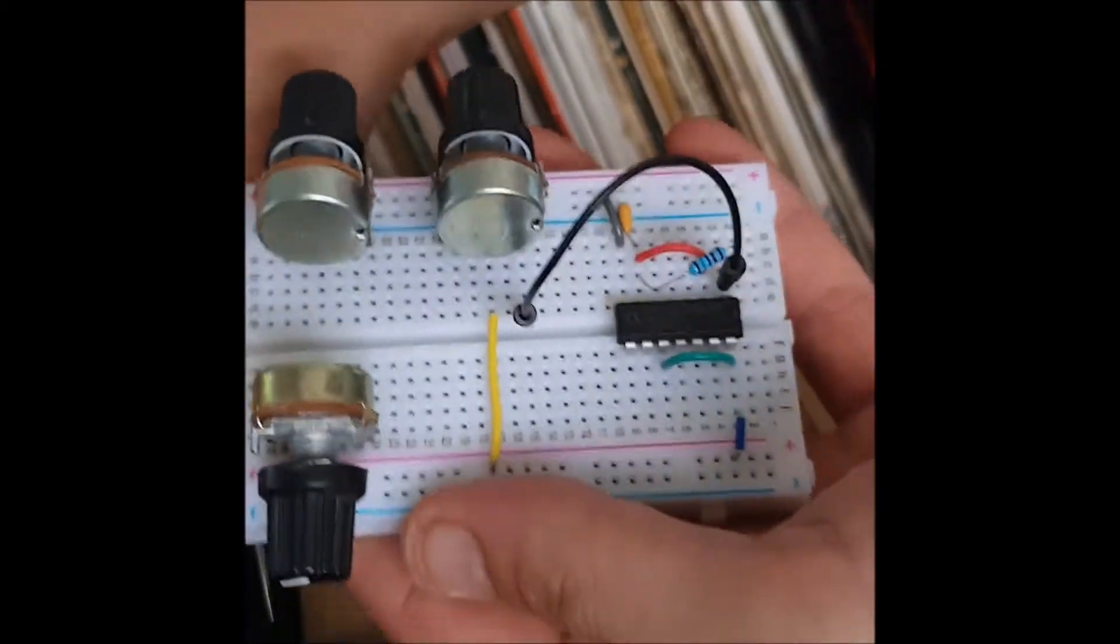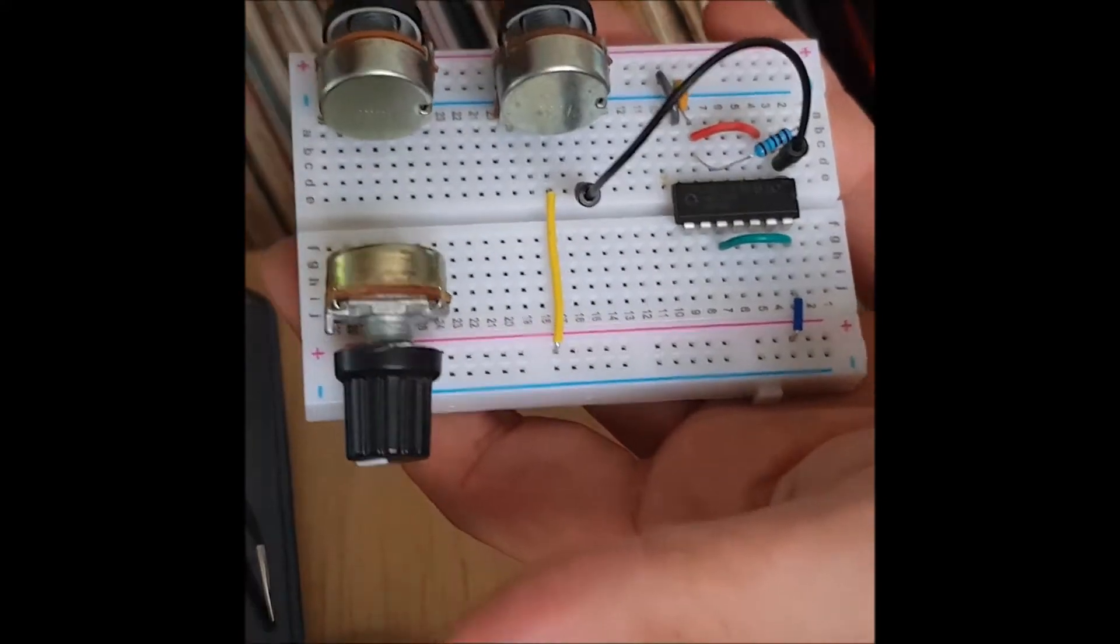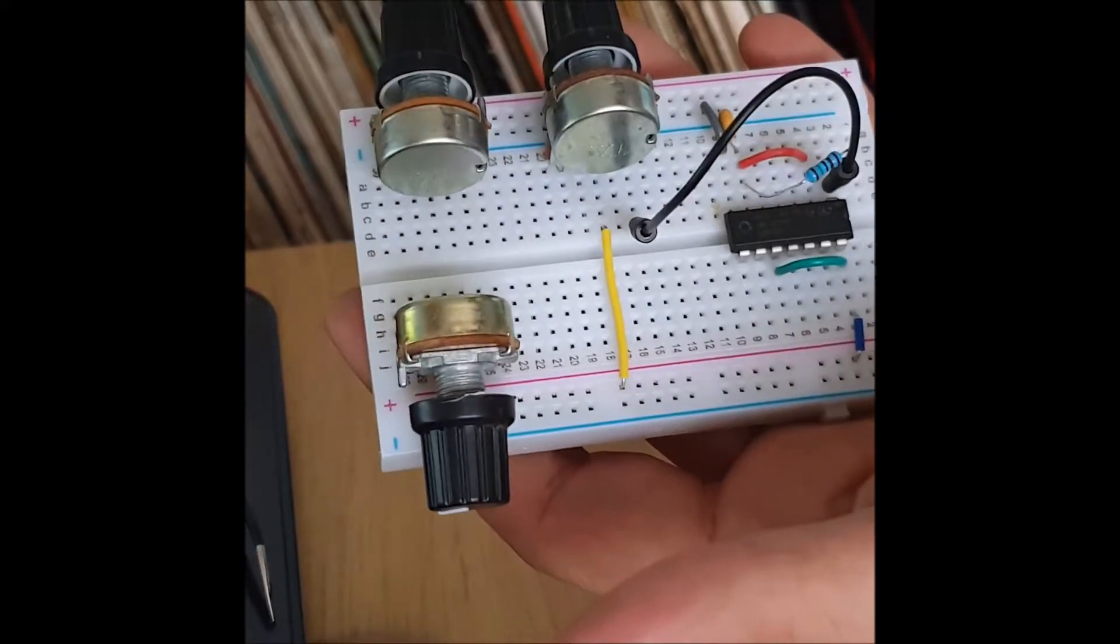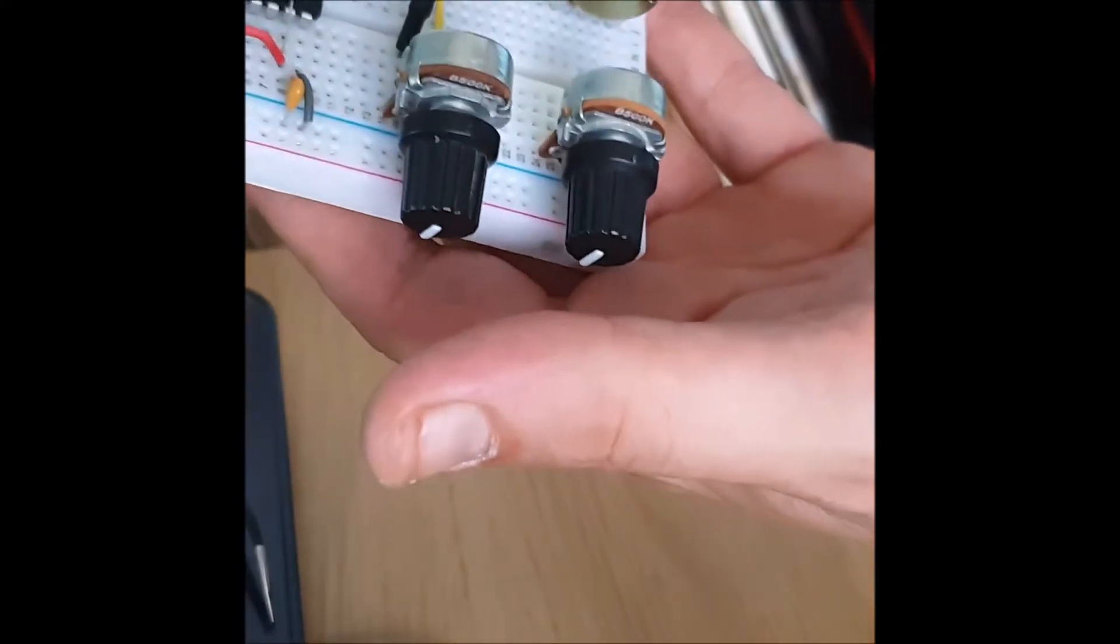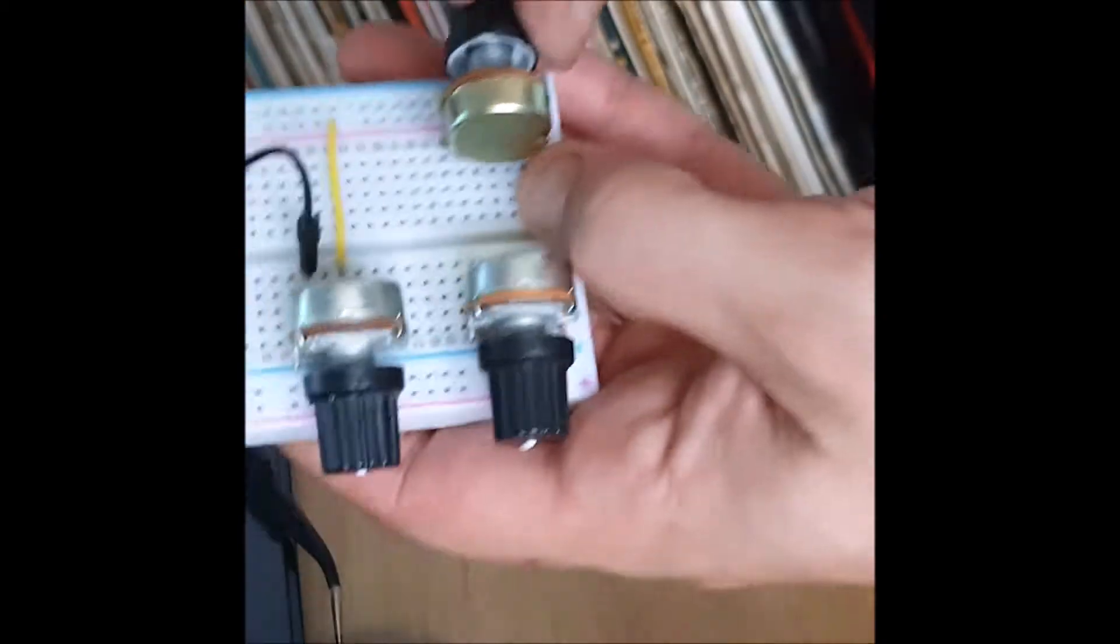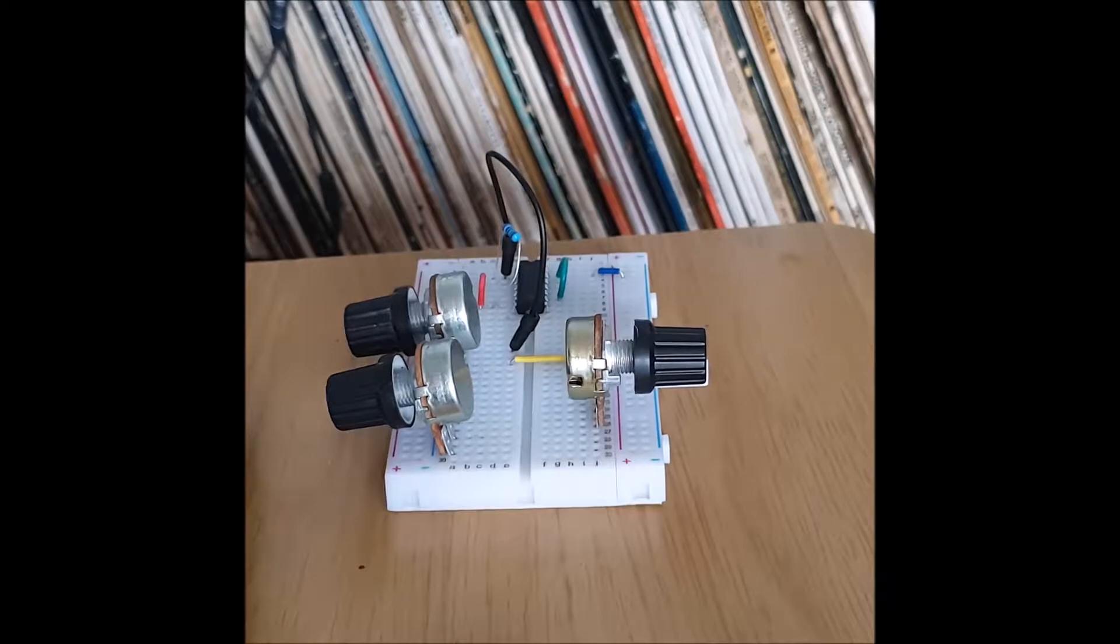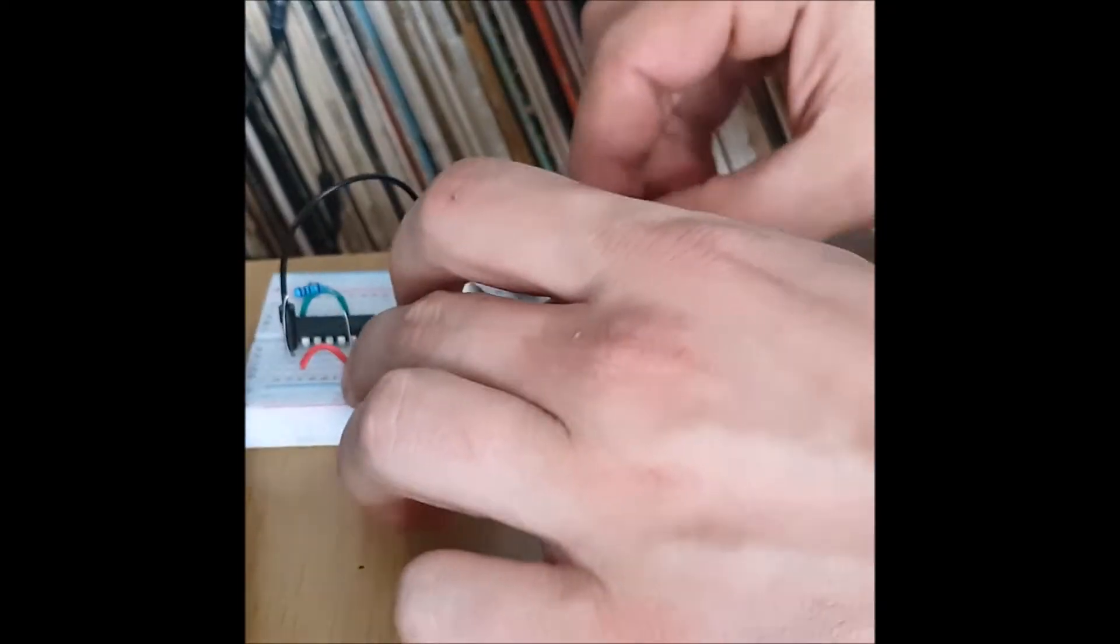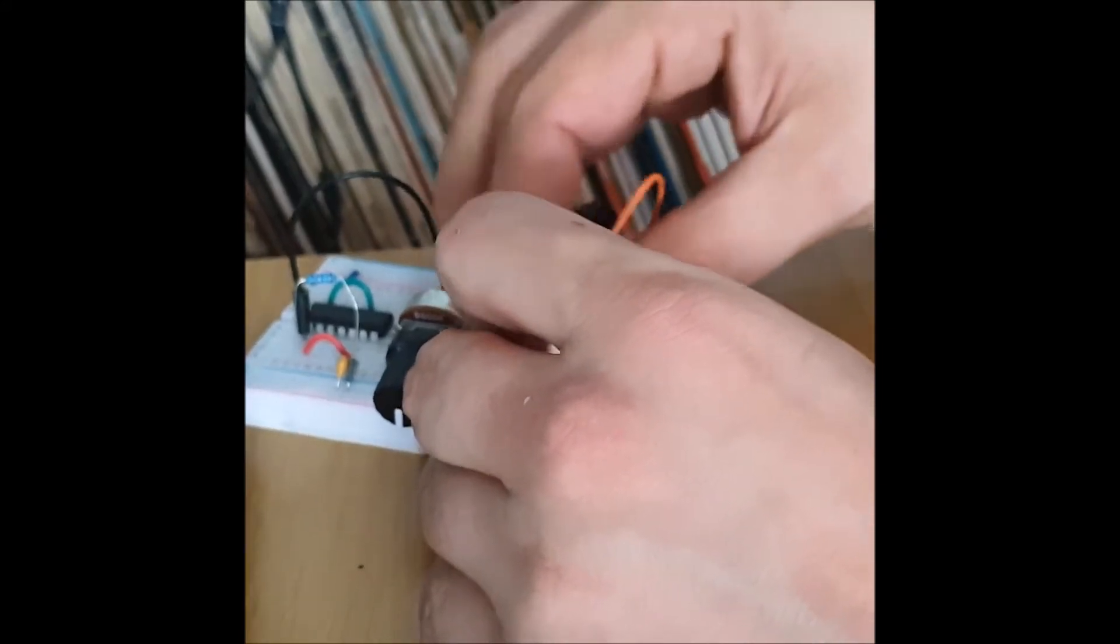Take a jumper and go from the positive row over to the middle leg of the variable resistor. The picture shows it's this one that's got nothing connected to it. I'm going to move this up a bit. Go from the positive to the middle leg. It's too short. Positive to the middle leg, done.